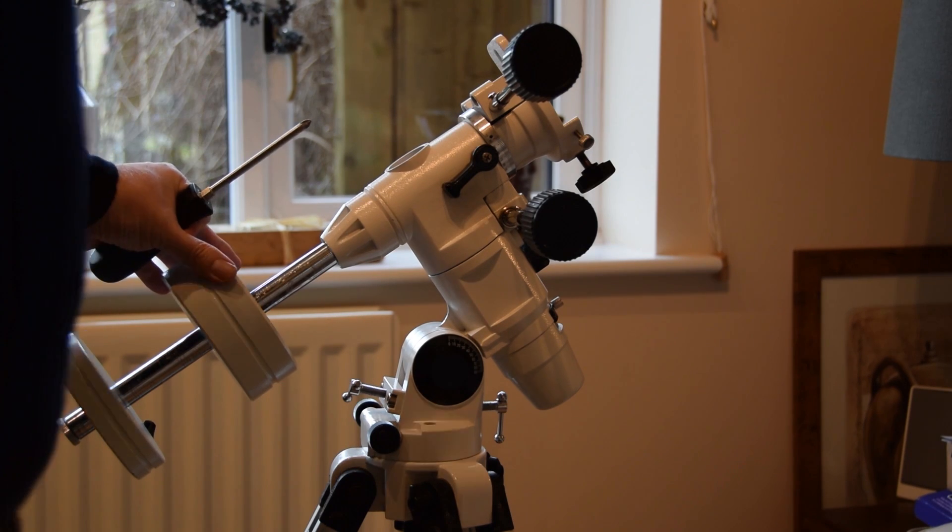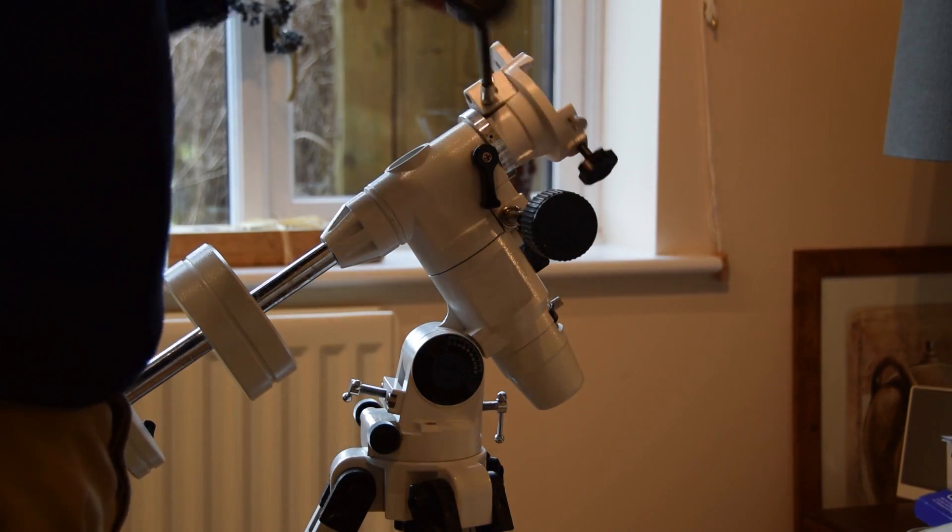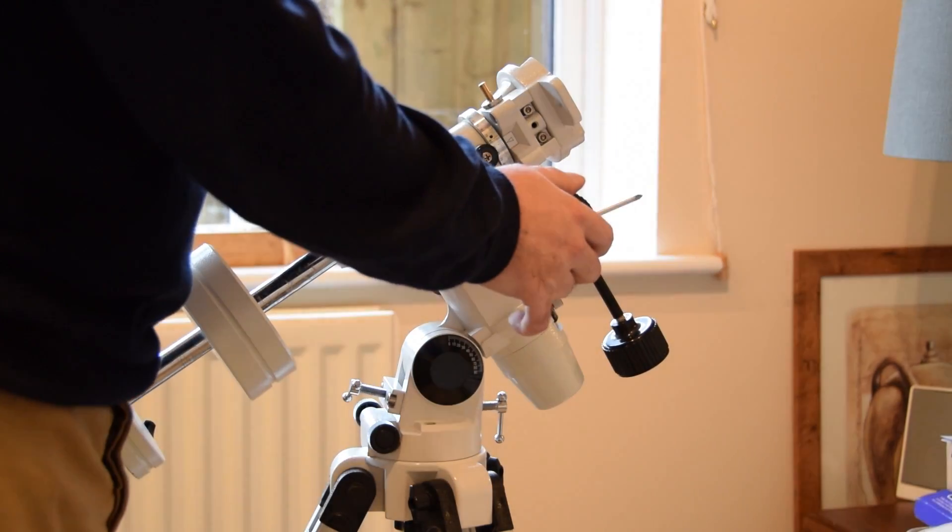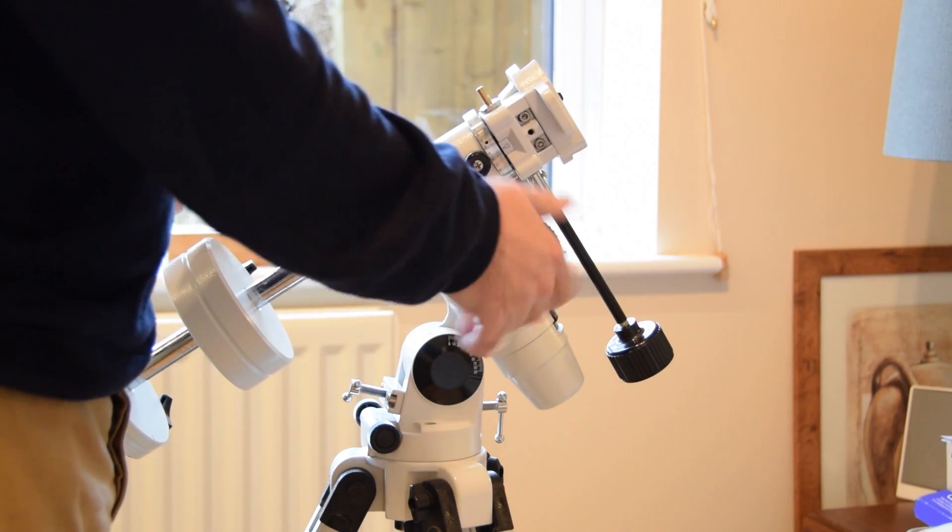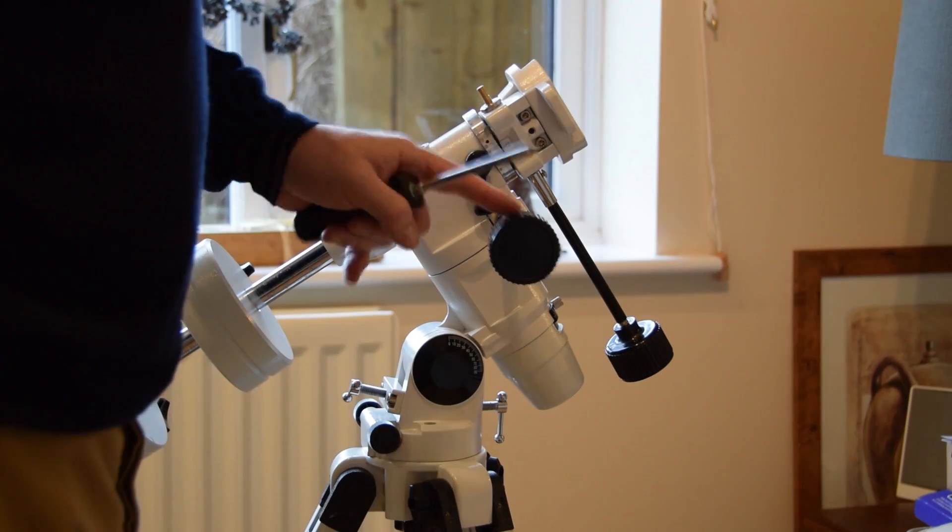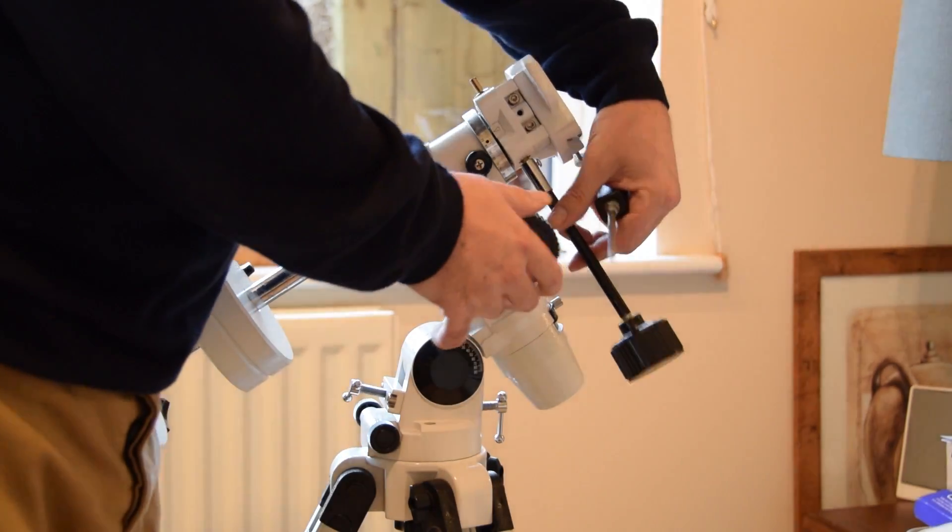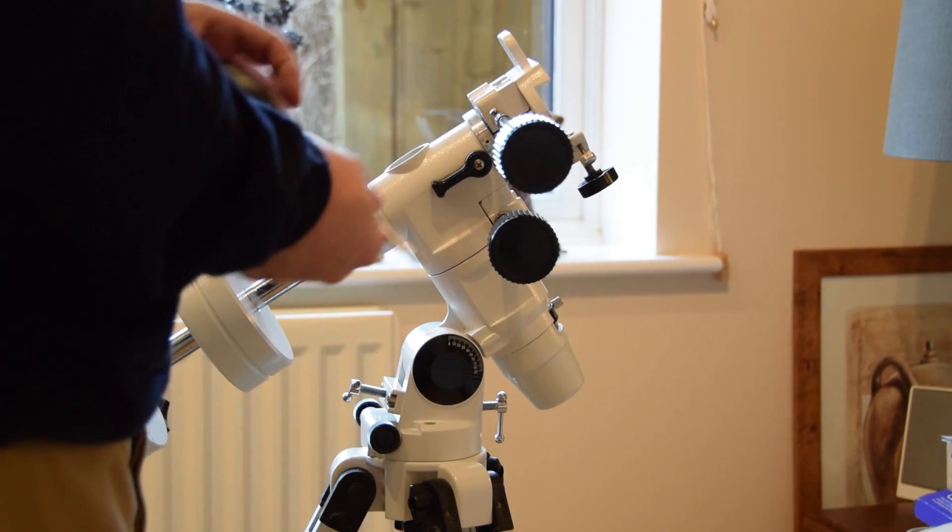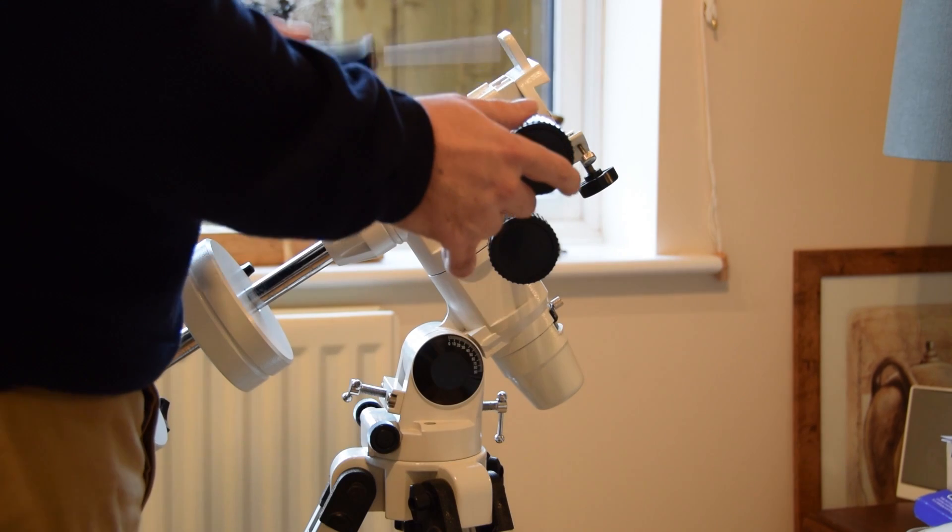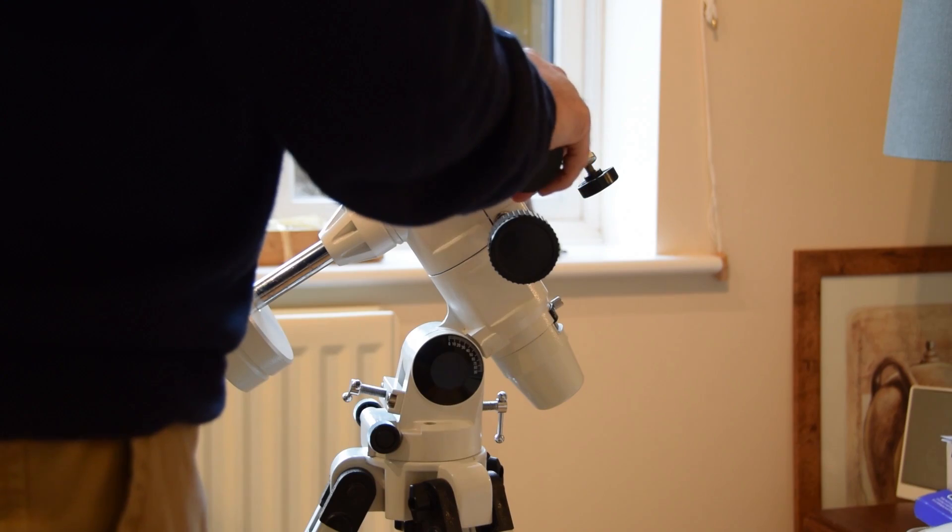At the moment what you have is the conventional arrangement which allows us to move the RA and deck axes with these slow motion adjustments. The first thing the motor says is we have to remove these because you can't actually use the motor and the slow motion adjustments together afterwards, which might be a bit of a pain to be honest, but let's see.